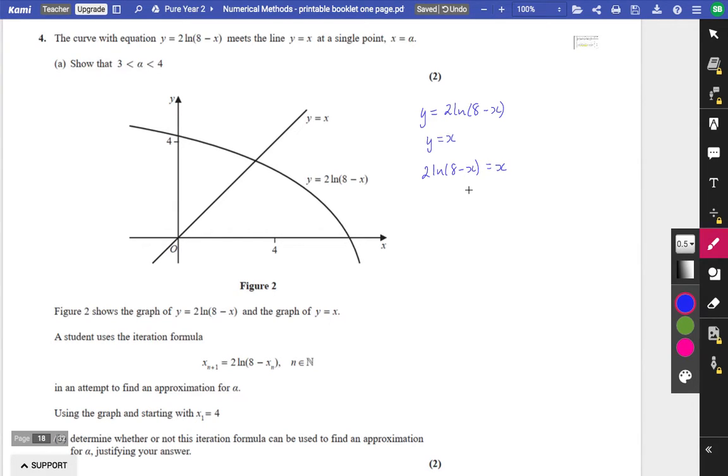So if we make these things equal to each other, we would have 2 ln of 8 minus x equals x. So I'm going to make it equal into a new function. I'm going to do that the function is 2 ln of 8 minus x minus x. And then I'm going to substitute in 3 and I'm going to substitute in 4 and hope that I have a change in sign.